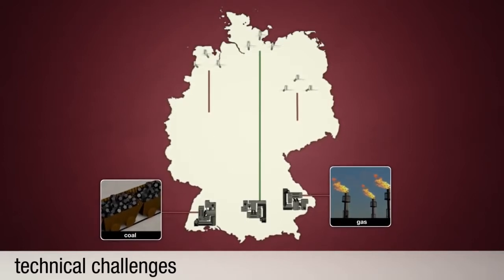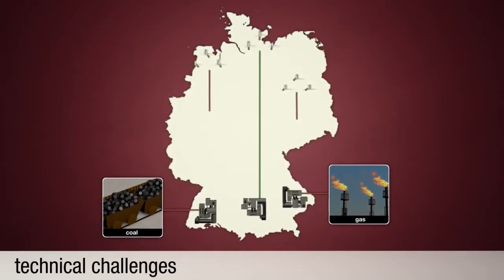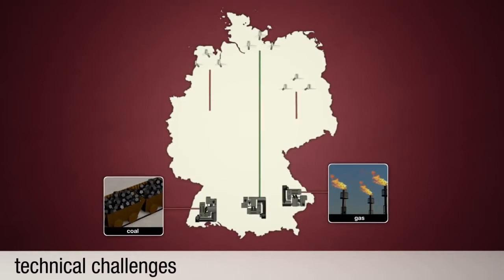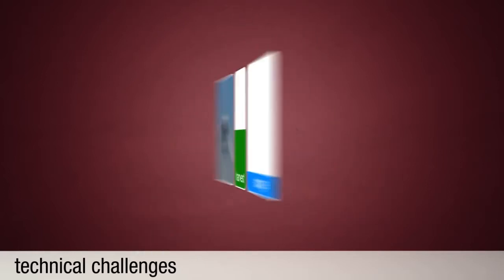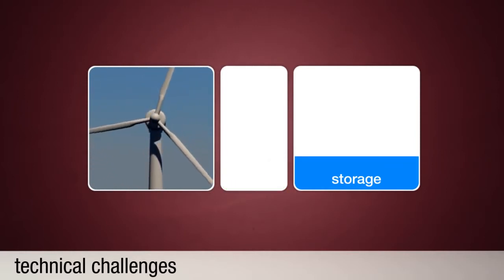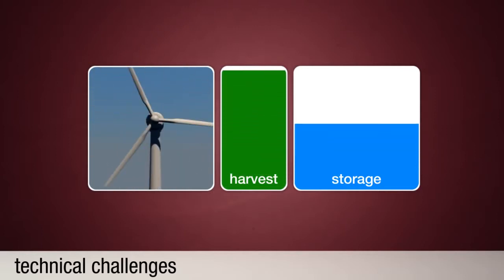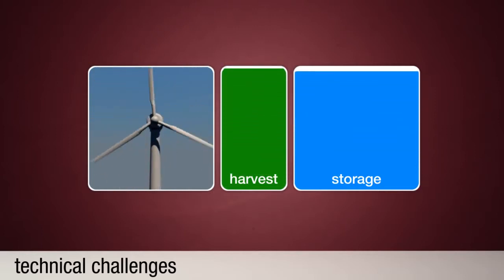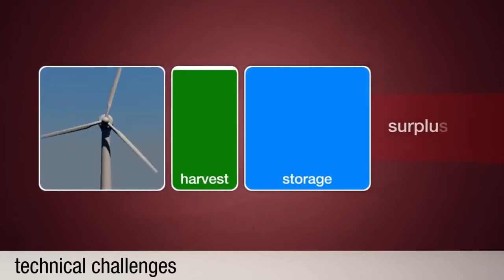As a result, energy often has to be bought from other sources, even though enough energy is actually produced. In addition, renewable energy sources are heavily dependent on the weather. Their output fluctuates. In times when power plants achieve a high performance, for example when there is a strong wind, there is a lack of sufficient storage capacity for the energy surplus.